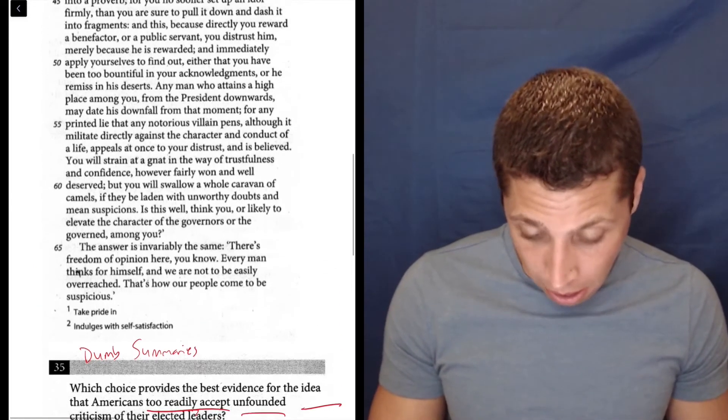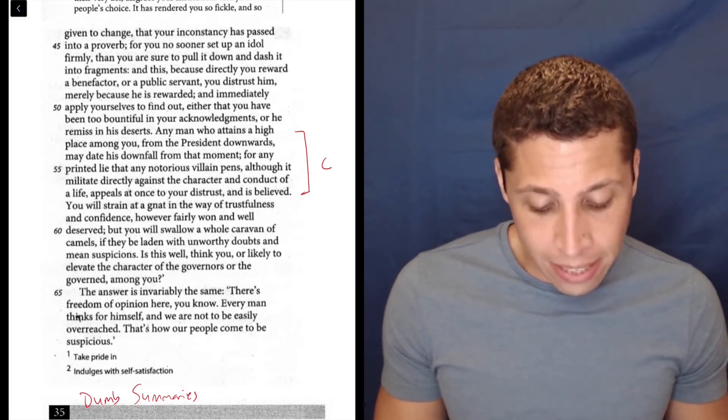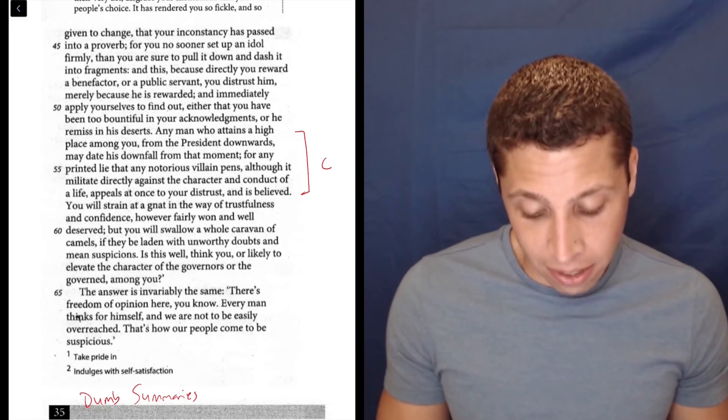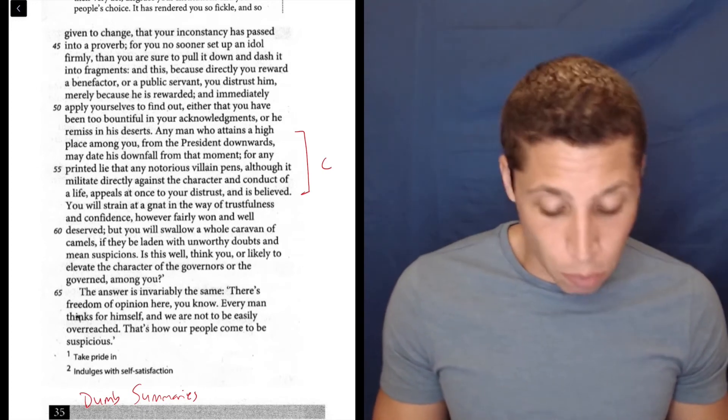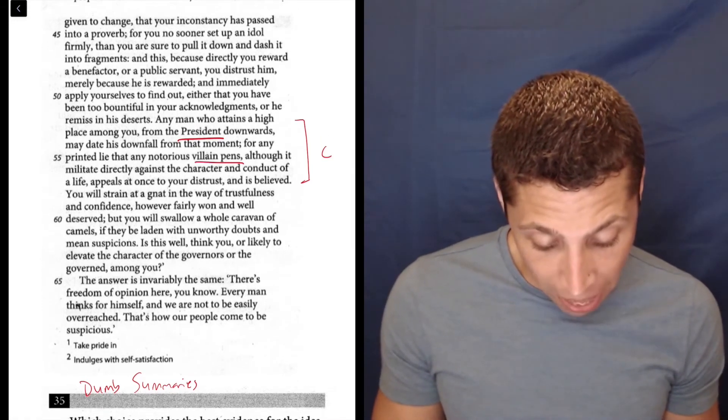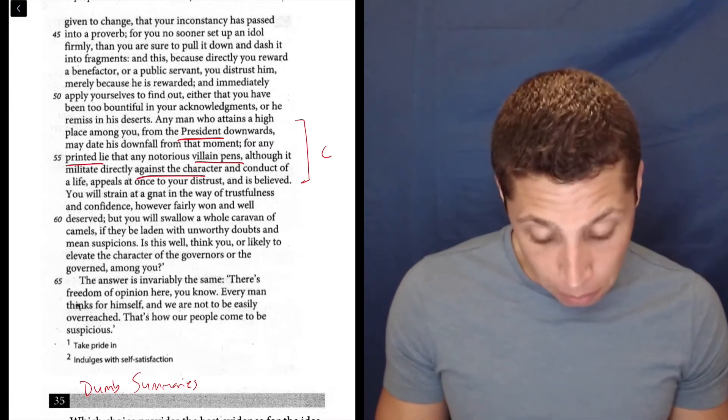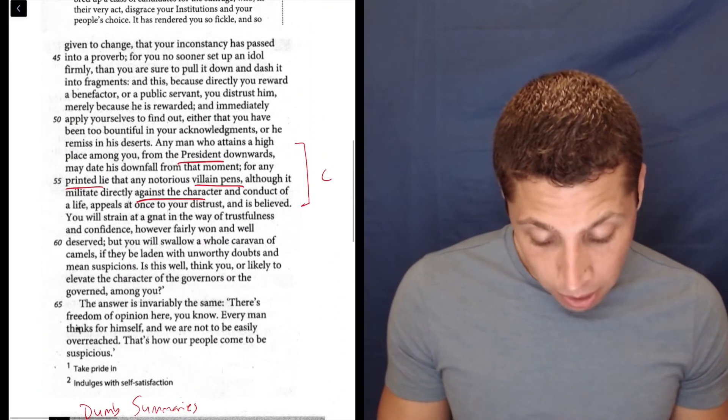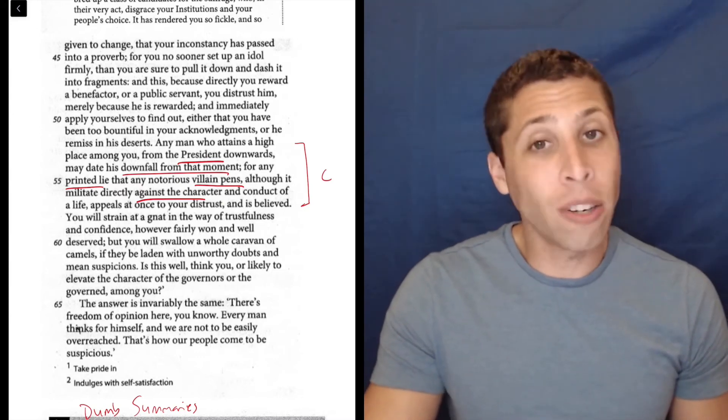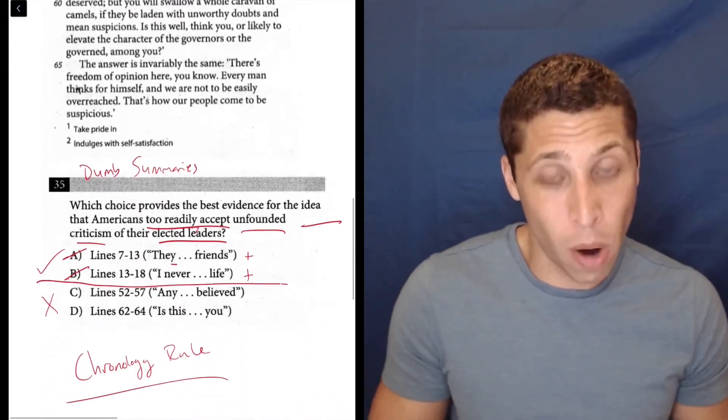Let's see what else we get. 52 to 57, that is here. Any man who attains a high place among you, from the president downwards, may date his downfall from that moment. For any printed lie that any notorious villain pens, although it militate directly against the character and conduct of a life, appeals at once to your distrust and is believed. We're talking clearly about elected people, the president and down, so elected leaders. Are we talking about criticism? Yeah, they're villains, printed lies, against the character. And the idea that Americans too readily accept it—well, the downfall of that person comes from the moment the criticism is penned. I don't need to understand exactly why this is right, but it seems to hit a lot of the boxes that I expected from the question.